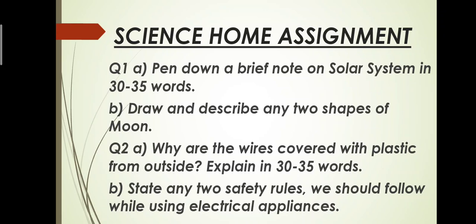Then the B part is draw and describe any two shapes of moon. In your science book on page number 126 there is a topic how the moon changes its shape. There are two shapes of moon, the full moon and a new moon. You have to describe both shapes and draw the pictures. The pictures are drawn in your science book. Draw, label, and color it properly.